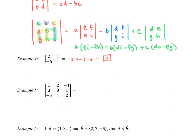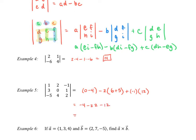Example 5 is the 3 by 3. We have 1 multiplied by — let's walk through this: 0 times 2 minus 1 times 4 — then minus (don't forget that middle term, it's a minus) 2 times the matrix giving us 3 times 2, so 6 minus 1 times negative 5, so 6 plus 5 equals 11 — so minus 2 times 11 equals minus 22. Then plus negative 1 times (3 times 4 so 12, minus 0 times negative 5, so just 12). Simplifying: negative 4 minus 22 minus 12 gives us negative 38.